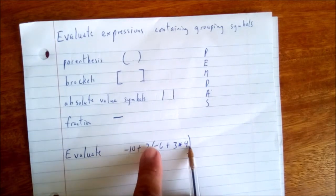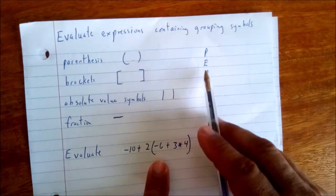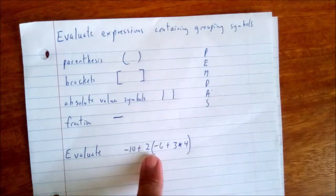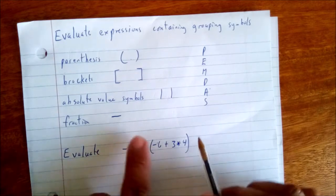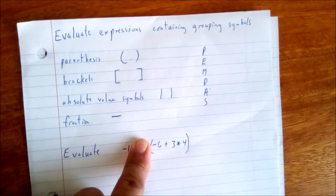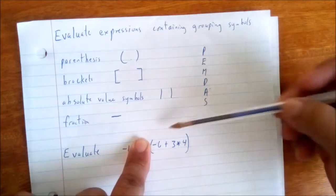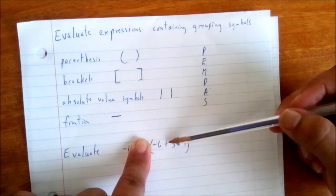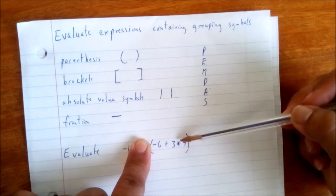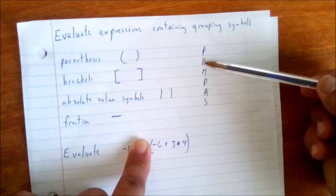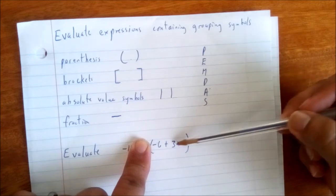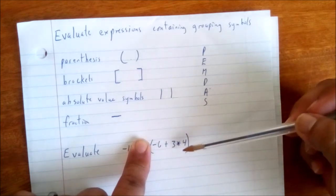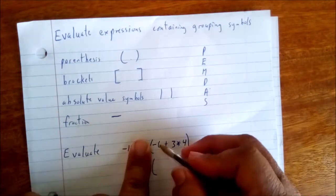We are working with just this piece inside the brackets because PEMDAS tells us parentheses come first. Inside the brackets, PEMDAS still applies. We have negative 6 plus 3 times 4. Does addition come first or multiplication? According to PEMDAS — parentheses, exponents, multiplication — we need to do this multiplication first.